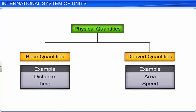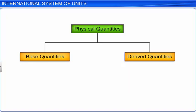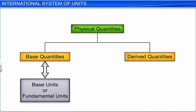The units of fundamental, or base quantities, are called base units or fundamental units. The units of derived quantities are expressed as a combination of base units. Such units are called derived units.